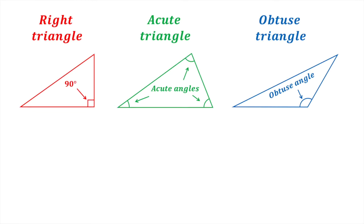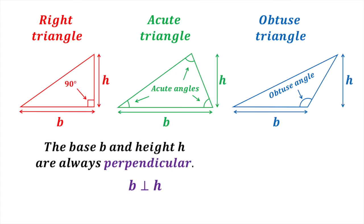In all of these triangles, it's important to understand that the base and the height are always perpendicular with respect to each other, that is, 90 degrees to each other. Now regardless of whichever of the three types of triangles we have, the formula for the area of each is the same — the area of a triangle is always one half times the base times the height.